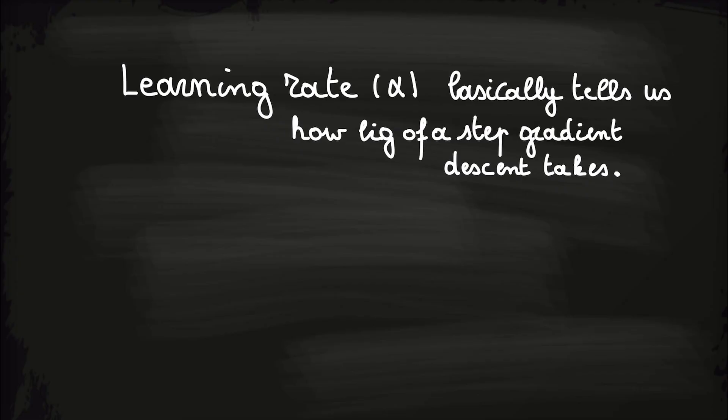The learning rate, also called alpha, basically tells us how big of a step the gradient descent algorithm takes.